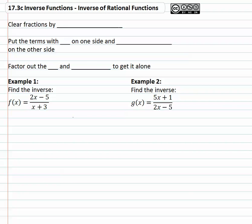With rational functions, we'll need to clear the fractions by multiplying by the least common denominator.